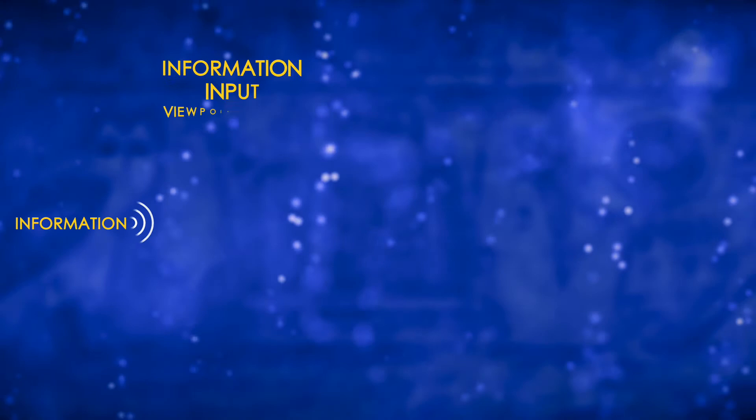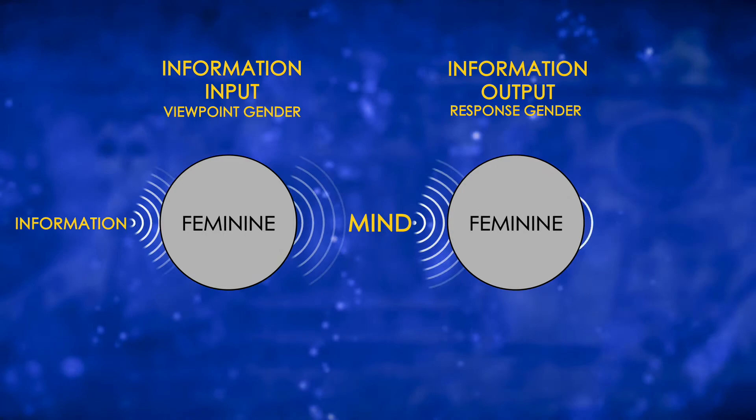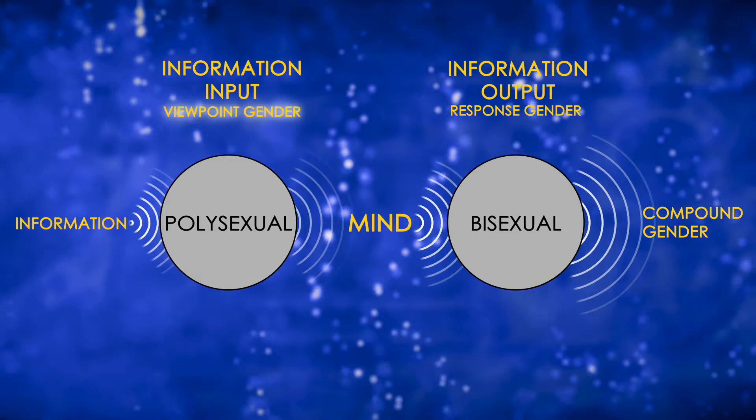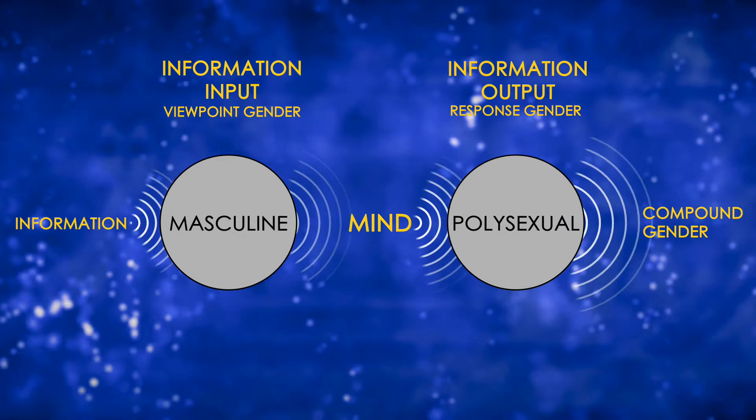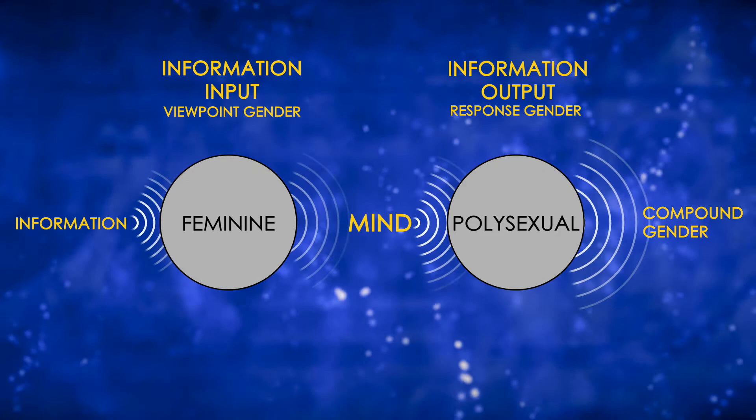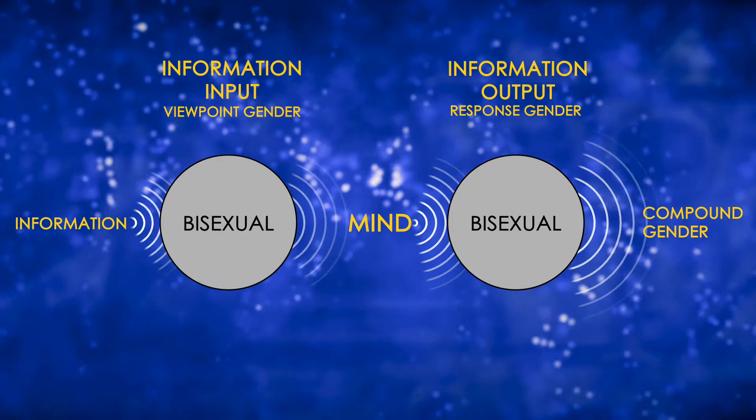The brain is able to produce 16 variations in gender because of how we process information. We process it in two distinct stages, starting with our viewpoint and ending with our response. In stage one, the brain views, gathers, and processes incoming information. To do this, it uses one of the four gendered systems: masculine, feminine, hybrid, or team.